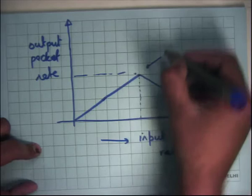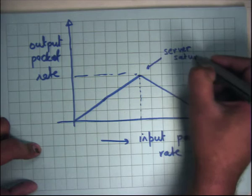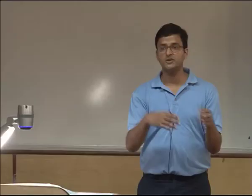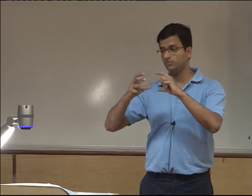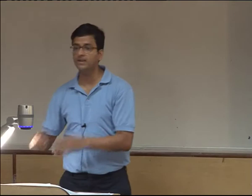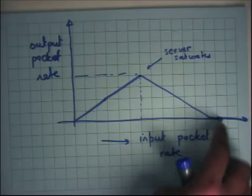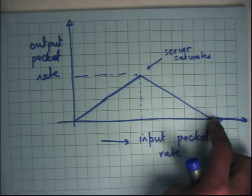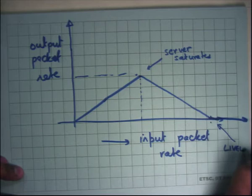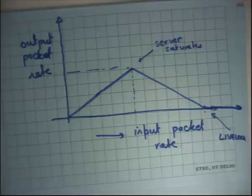The reason for the throughput drop is that after the input packet rate exceeds a certain limit, the producer gets to run more often and the consumer gets to run less often. Since the consumer is the bottleneck, the higher the input packet rate, the less often the consumer runs — until it doesn't run at all. At that point, the net output rate becomes zero. This is a livelock: the system is doing a lot of work, CPU utilization is 100%, yet the net useful output is actually zero.